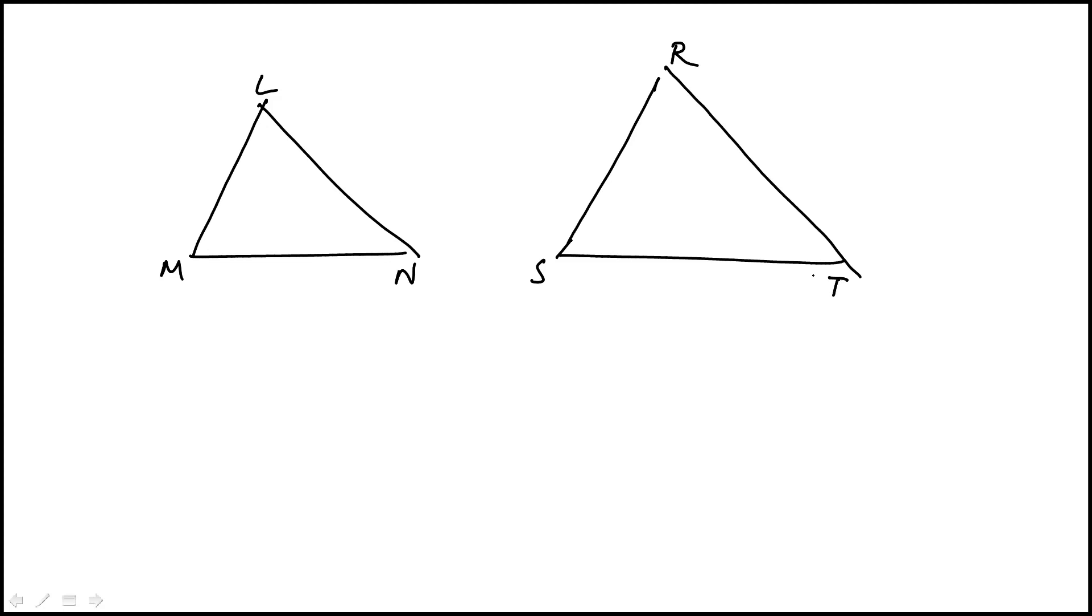We're told that angles L and R each have measures of 60 degrees, LN is 10, and RT is 30.